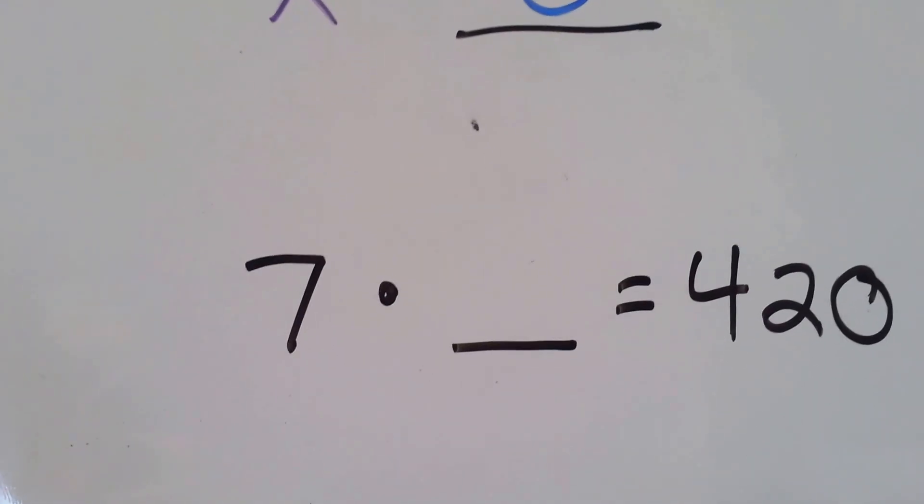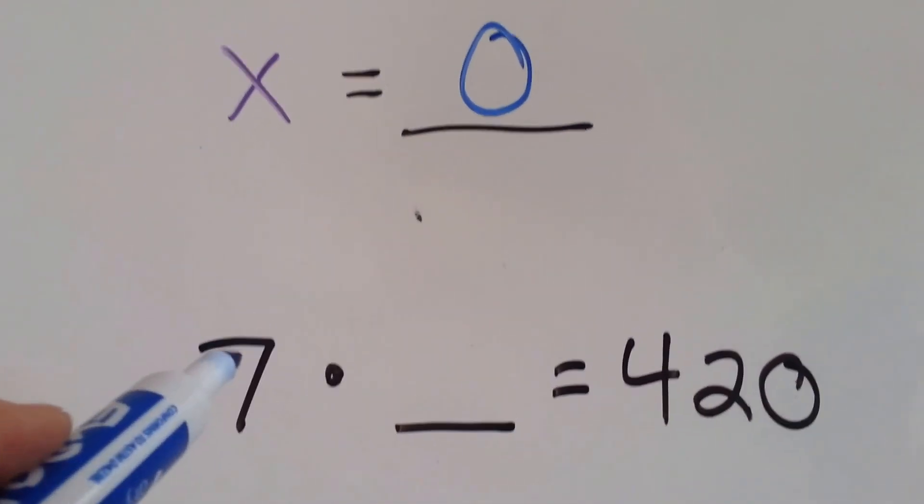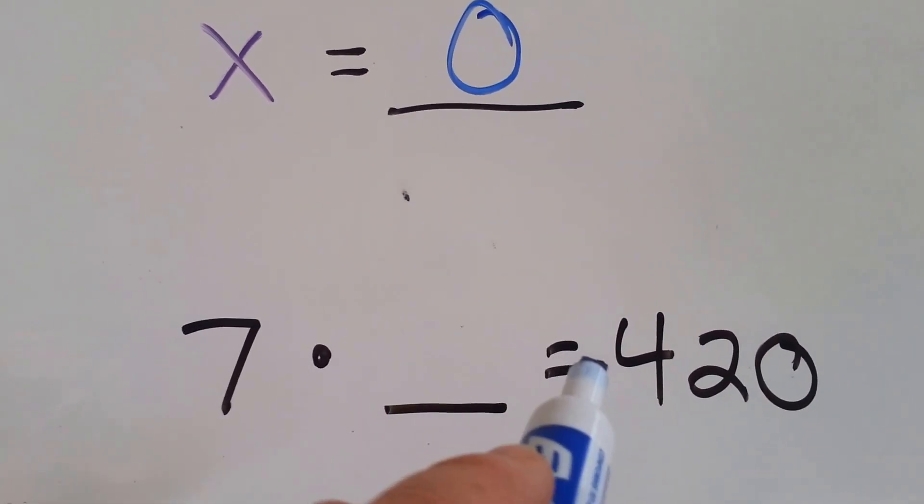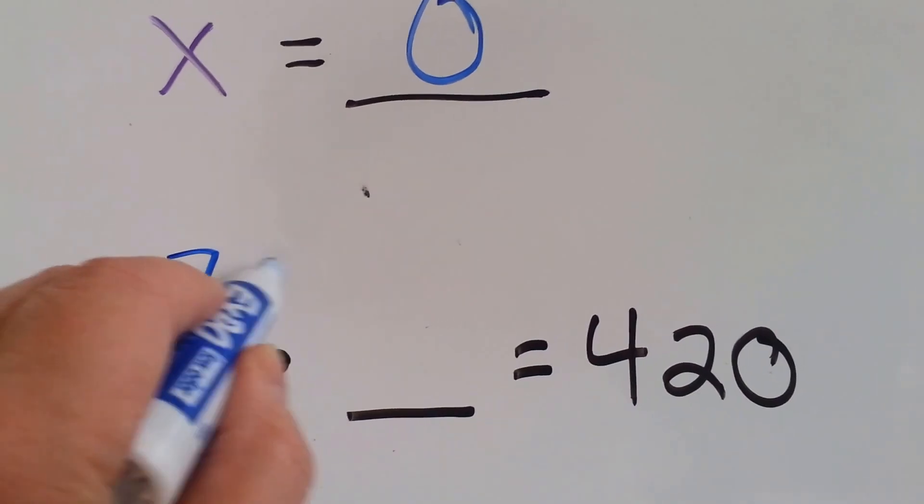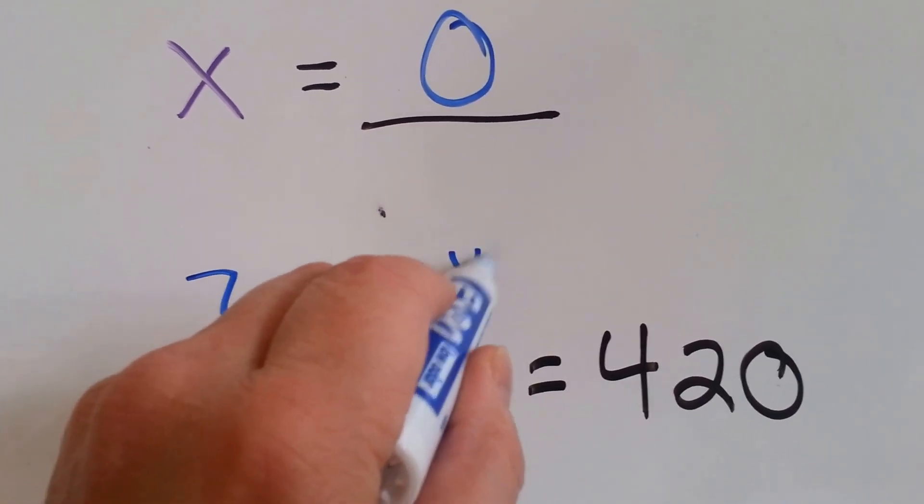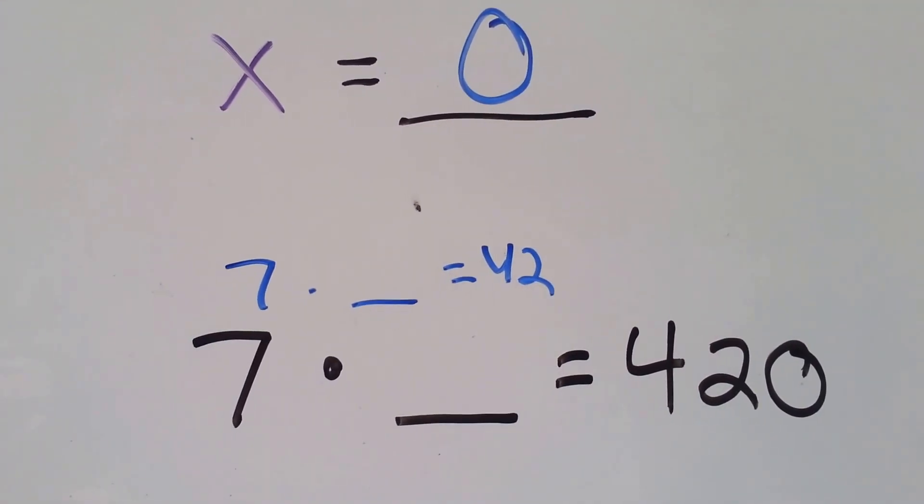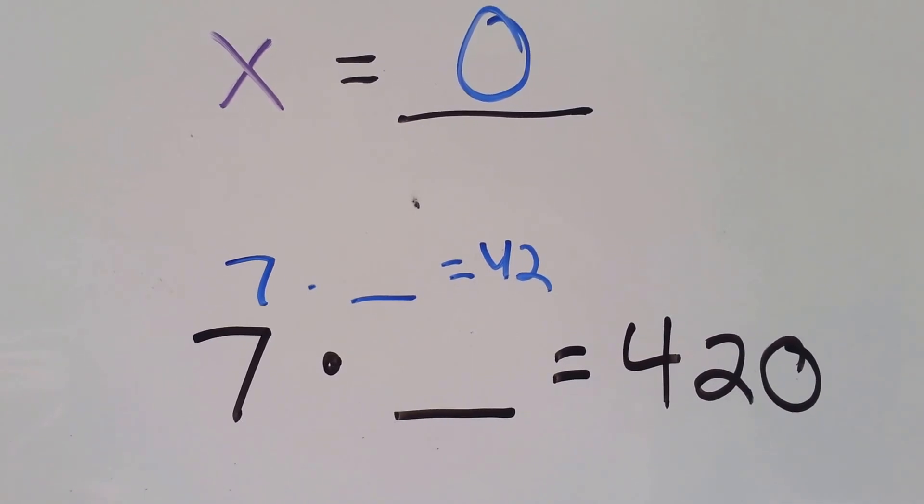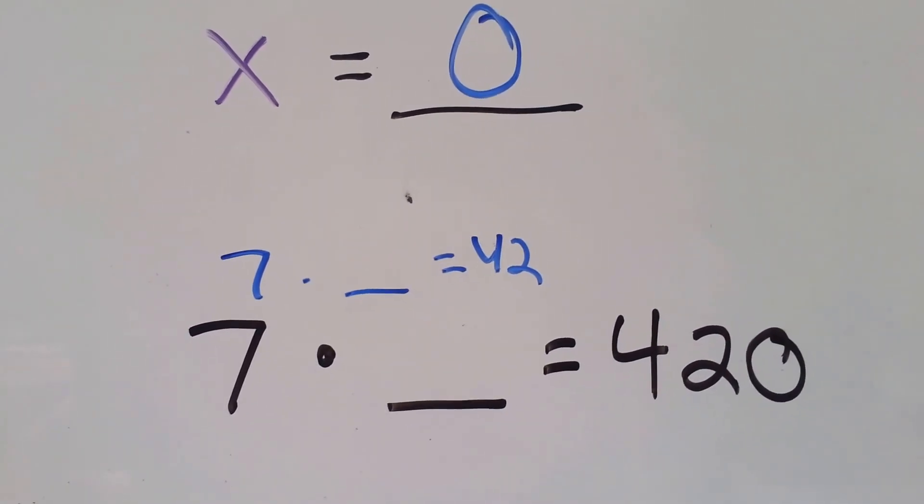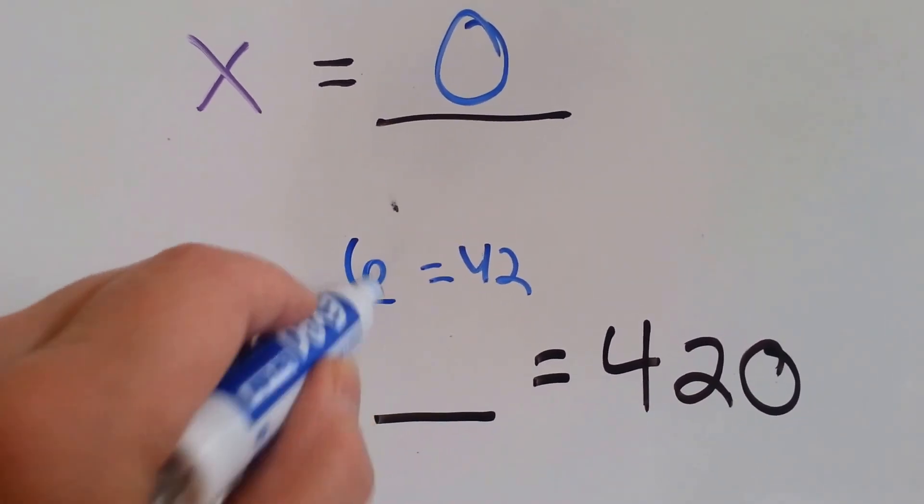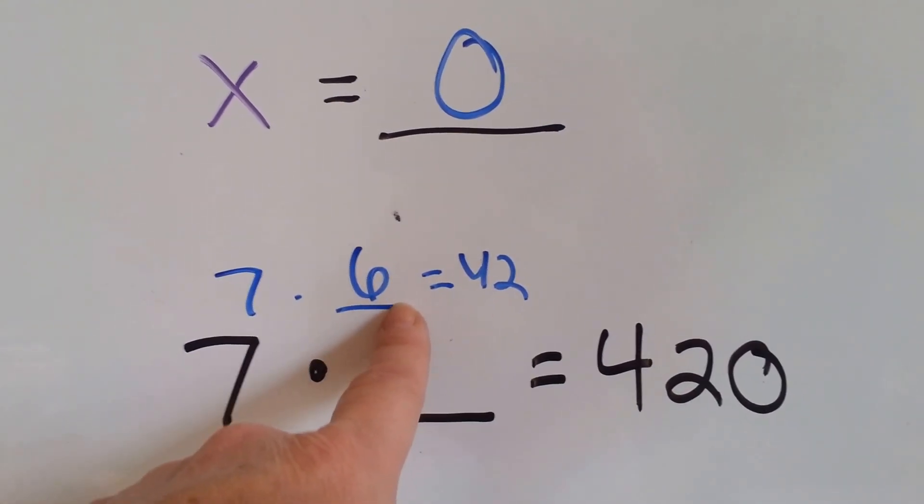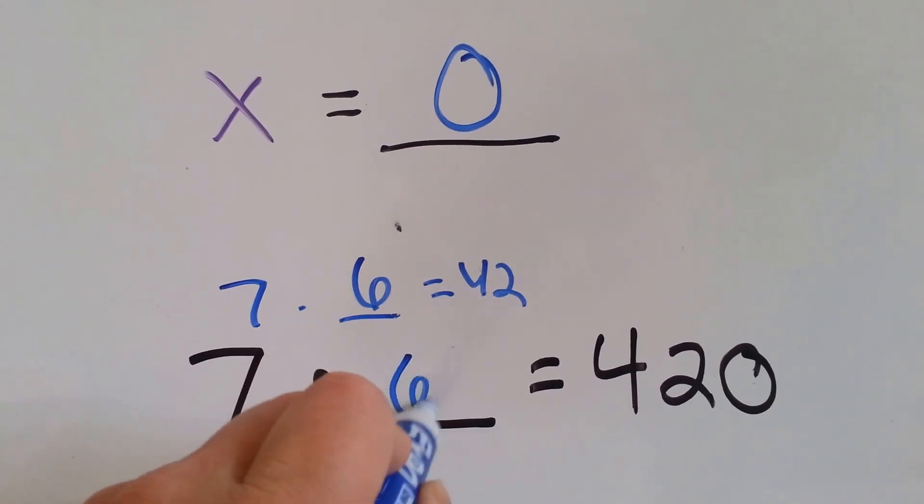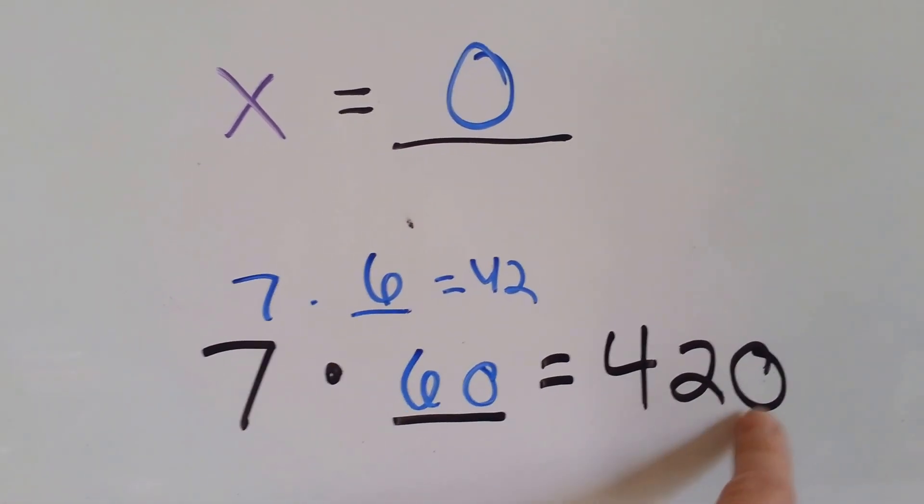How about this one? 7 times something is equal to 420. 7 times something is equal to 42. 7 times what equals 42? 7 times 6. Now, because this one doesn't have the 0, this one's going to have to have the 0. So that's going to have to be 60 so that we can have that 0 there.